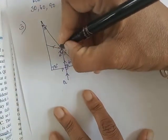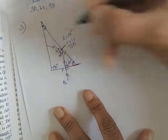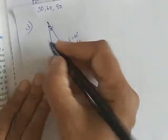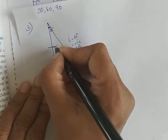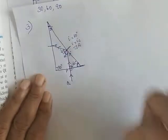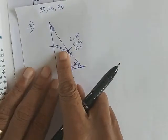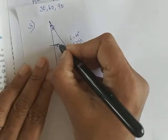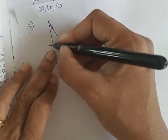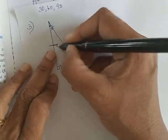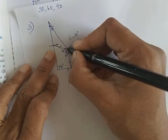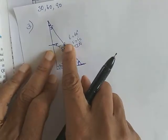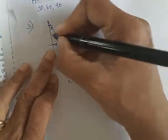The ray is reflected at 60°. Now draw a normal at the next surface where the reflected ray hits. To find the angle of incidence there, consider the triangle formed: the angles in it are 30°, 60°, and 30°.